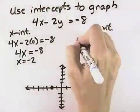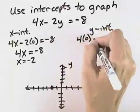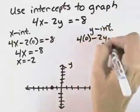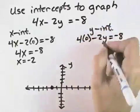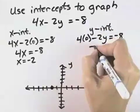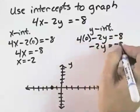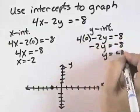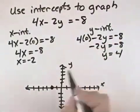For our y-intercept, we let x equal 0, so we have 4 times 0 minus 2y, and we solve for y. 4 times 0 is 0, so we have negative 2y equals negative 8. Dividing by negative 2, the negatives cancel, and we have y equals positive 4.